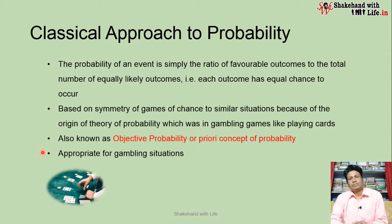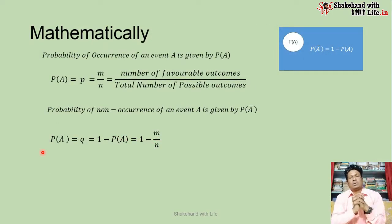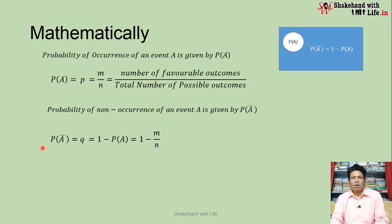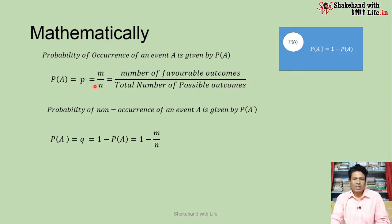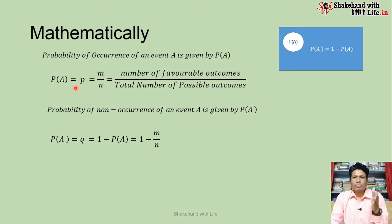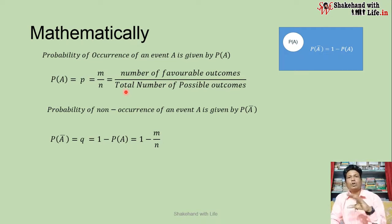It is appropriate and suitable for gambling situations or gambling games like playing cards. Now we understand the classical approach to probability mathematically. The probability of occurrence of an event A is given by P(A), which equals m divided by n, where m is the number of favorable outcomes and n is the total number of possible outcomes.